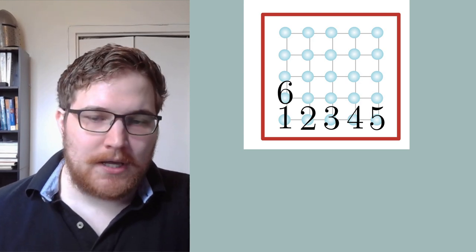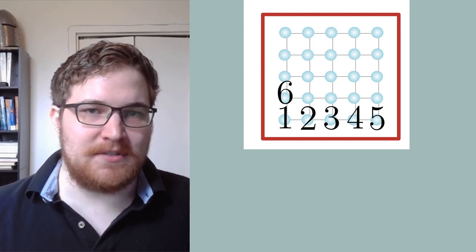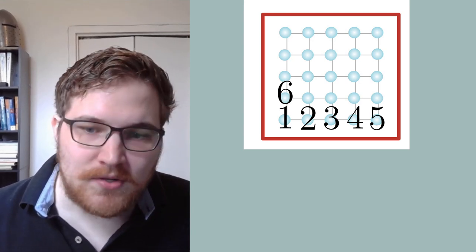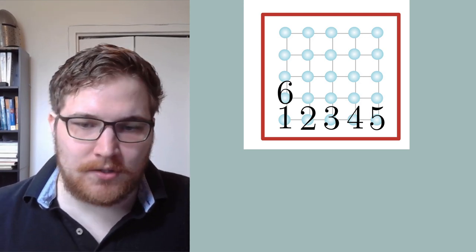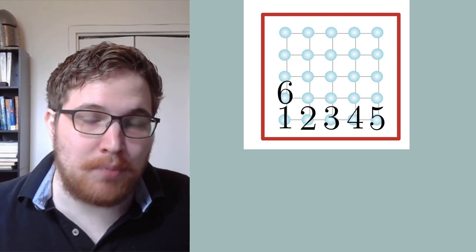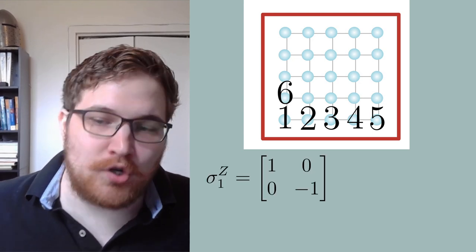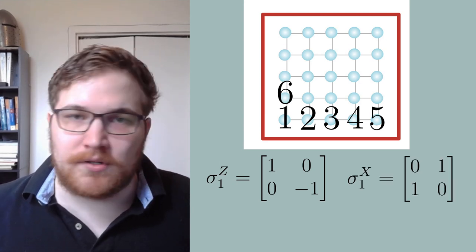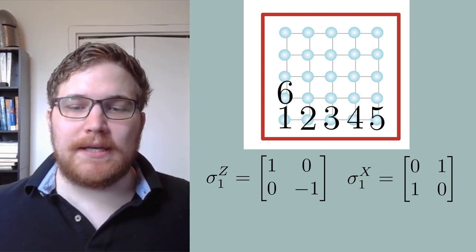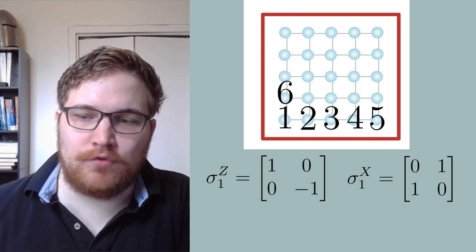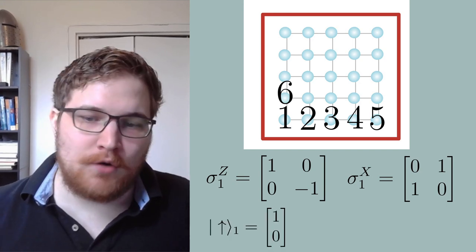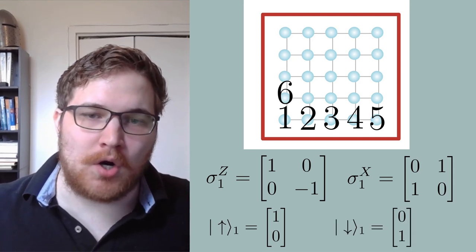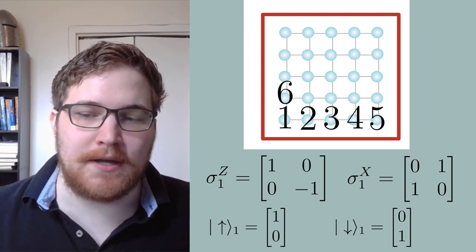So let's look at site 1. Here we assign a local Hilbert space that describes the physics here. On site 1, we have the usual spin representation. We choose a basis so that the Pauli-z matrix is diagonal, and on site 1 we can give it, for example, a Pauli-z matrix. And perhaps for good measure, we can also write down a Pauli-x matrix. Looking at the Pauli-z matrix, it's probably intuitive to read off what the state for an up-spin is, and likewise a down-spin in the z-direction. An important thing to note here is that we always put a subscript denoting the lattice site.